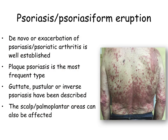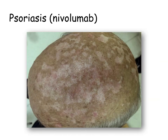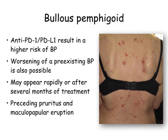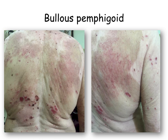Nova psoriasis, or exacerbation of psoriasis and psoriatic arthritis, is a well-established toxicity. Here we see a patient with pustular psoriasis, though all clinical types of psoriasis may be seen during immunotherapy. The same patient additionally developed vitiligo on his scalp. Patients under treatment with anti-PD-1 and anti-PD-L1 agents are at high risk of development or worsening of bullous pemphigoid. Here is a clinical example of a female patient with metastatic melanoma who developed bullous pemphigoid during treatment with nivolumab, and another case of a lady with both vitiligo and bullous pemphigoid who had to stop immunotherapy due to its severity.